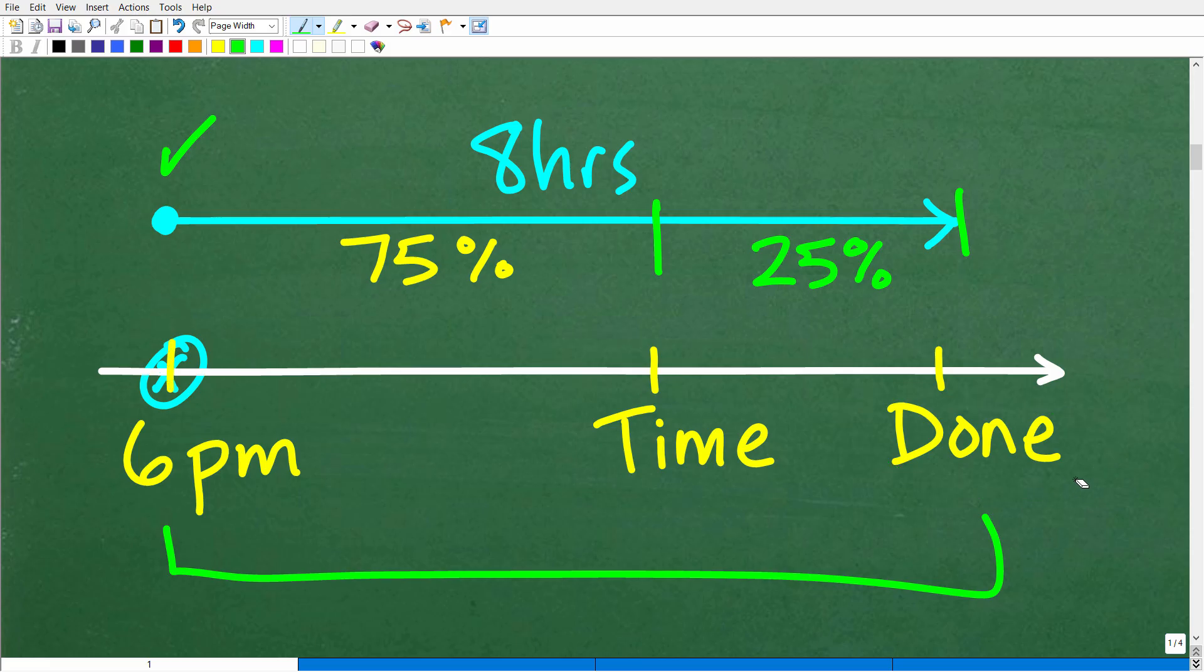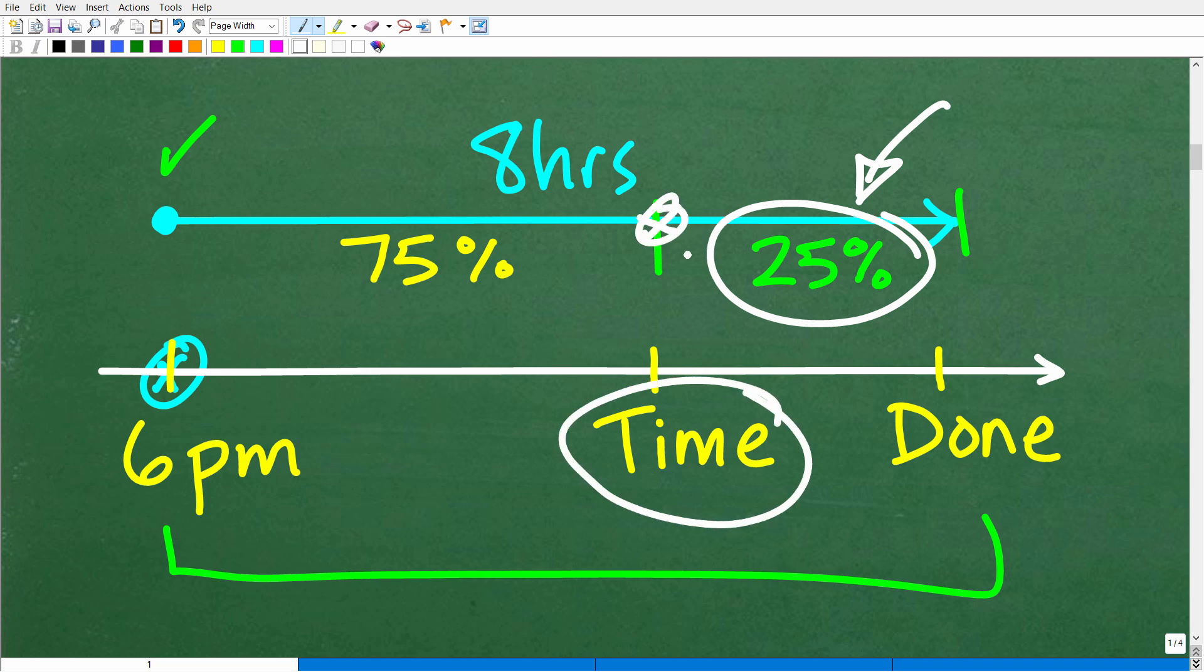Now, the problem is you have 25% more time remaining. So 8 hours, I have 25% more time remaining until I'm done. But hopefully, a lot of you picked up on it. If I have 25% more time to finish, that means I already worked 75% of my shift. So from 6 p.m., I already worked 75% of 8 hours.